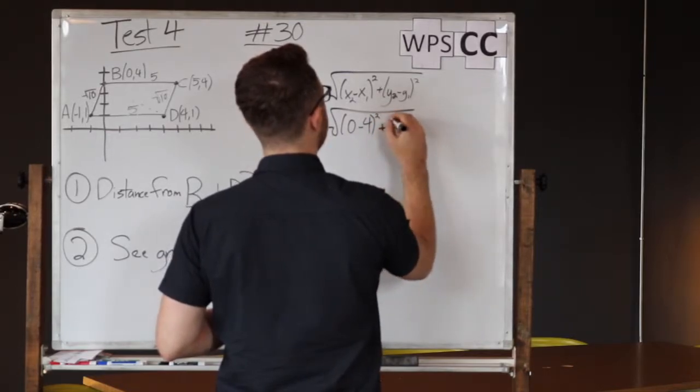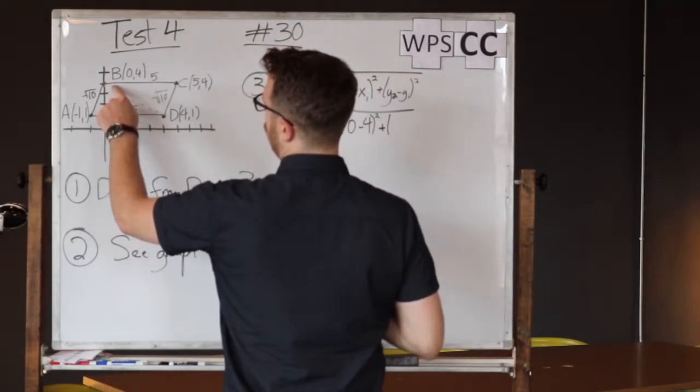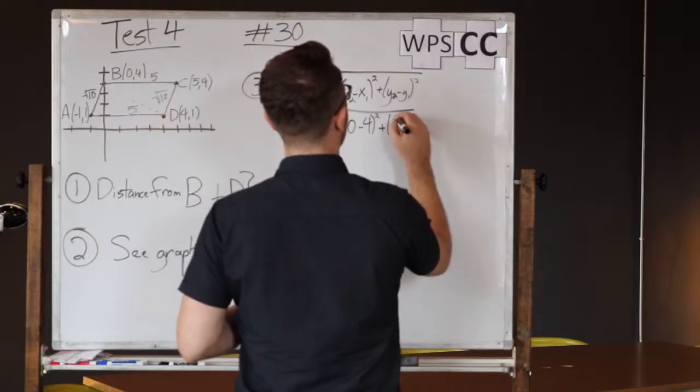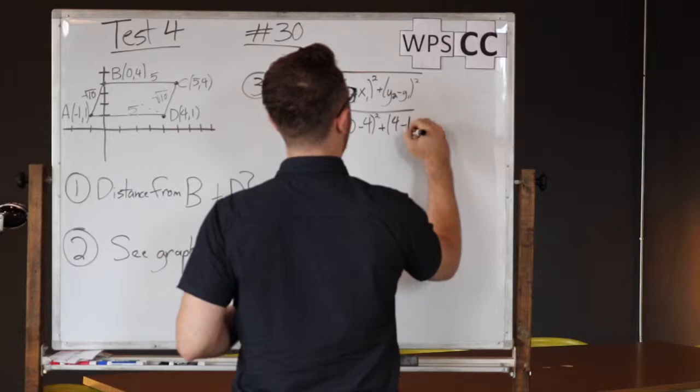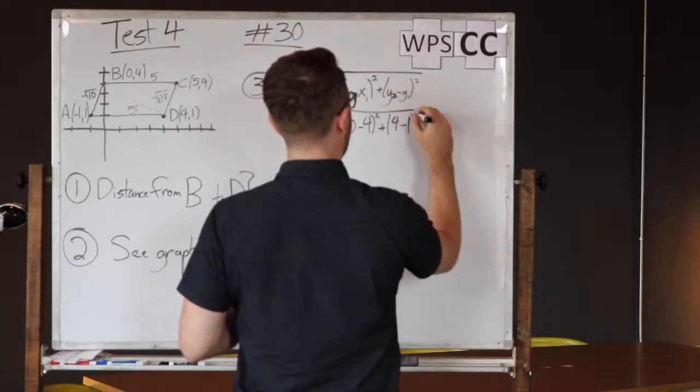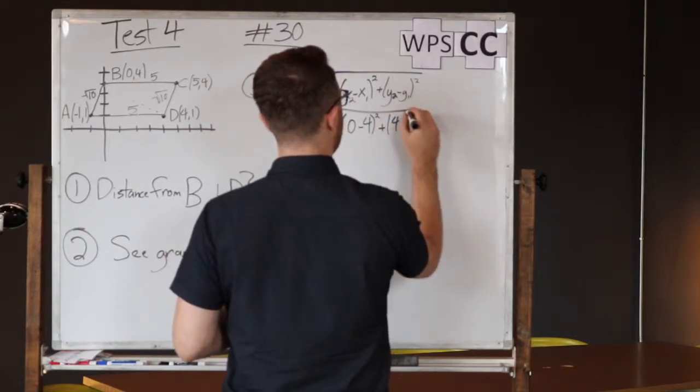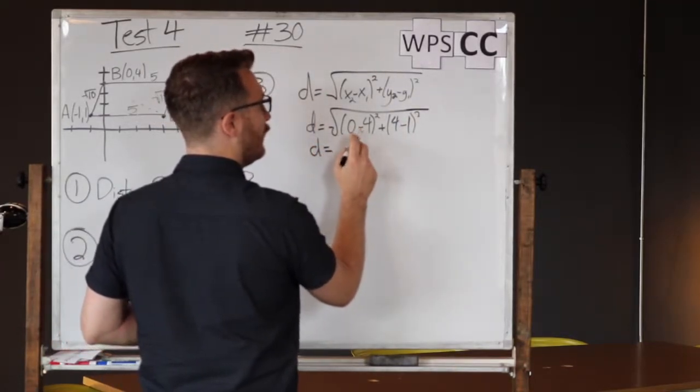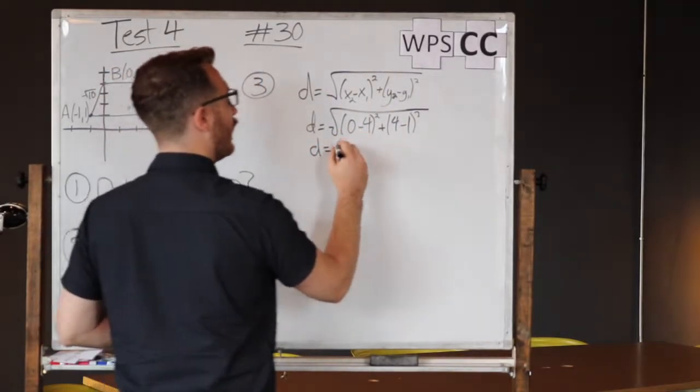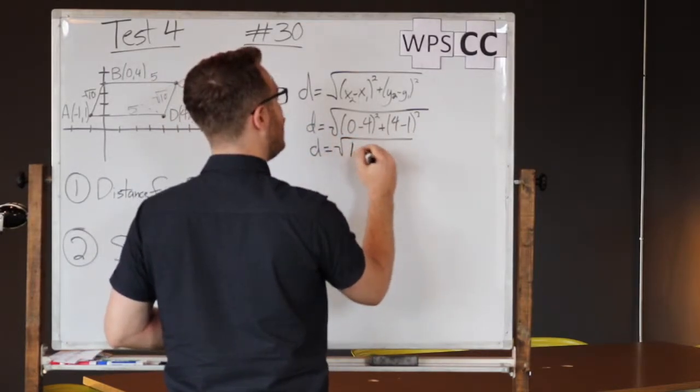That squared plus the first y coordinate is four minus the second y coordinate, which is one, and that is also going to be squared. Let's simplify. This will be a negative four squared. That gives us 16.